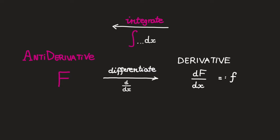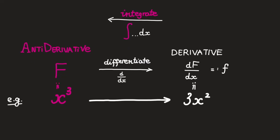What's an antiderivative? Well, roughly speaking, the words antiderivative and derivative refer to the input and output of the process of differentiation. Suppose when you differentiate a function big F, say x cubed here, you get a function little f, which in this case is 3x squared.